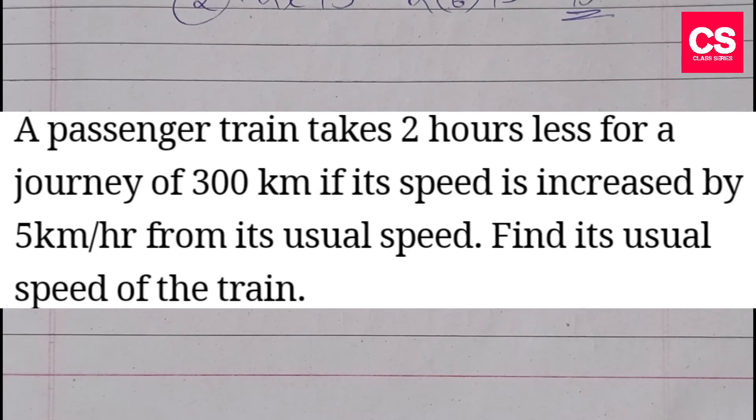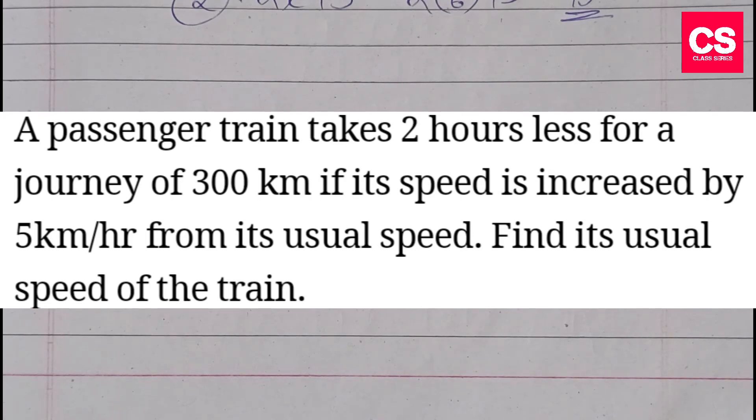Find the usual speed of the train. This means we have two scenarios. The total distance of the journey is 300 km. It takes 2 hours less if its speed is increased by 5 km per hour from its usual speed.